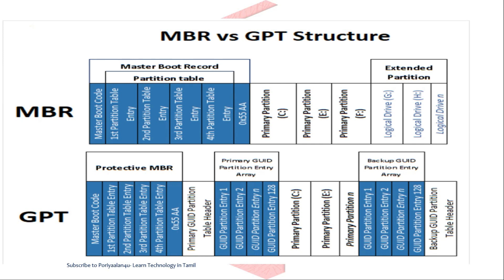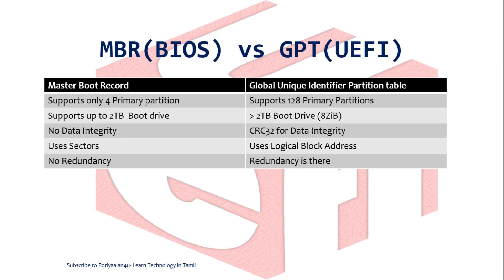The backup GPT partition is a key advantage — if the primary partition header is lost or corrupted, the backup copy of the GPT information records the data, providing data protection compared to MBR. Also, whereas MBR supports a maximum of four primary partitions, GPT supports up to 128 partitions.